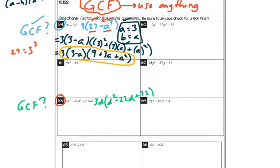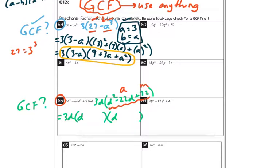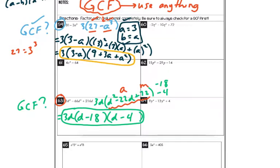Standing back and looking at that — the 3d is on the outside and we have a normal trinomial where the a value in front of d squared is 1. So this is just normal factoring. Think of two numbers that add to give negative 22 and multiply to give 72. Those numbers ended up being negative 18 and negative 4. So the final answer is 3d times (d minus 18)(d minus 4). We took out the GCF, and what was left on the inside was just normal trinomial factoring.